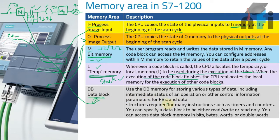Data blocks can be used in function blocks or ladder logic. It is generally read and write — you can erase this memory and rewrite it. It can be stored in bits, bytes, words, or double words. You can also use data blocks for timers and counters; for example, if you want to change the time of your process, that time value will be stored in a data block. These are the different memory areas in the S7-1200.